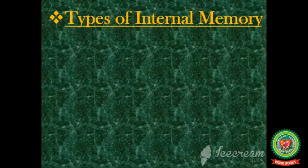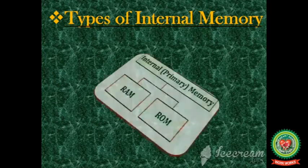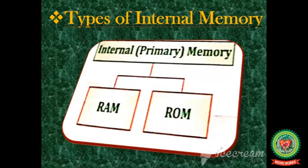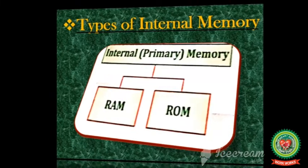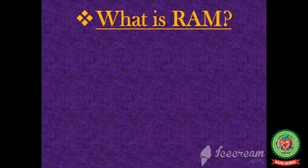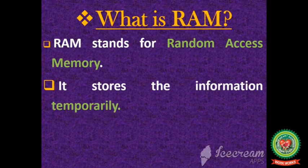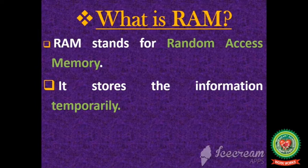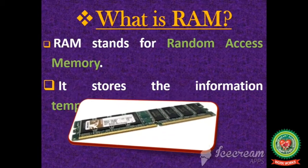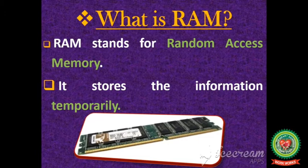There are two types of internal memory: RAM and ROM. First is RAM. RAM stands for Random Access Memory. It stores information temporarily, meaning the information stored in this memory is lost when you turn off the computer or when the power goes off. This is what a RAM chip looks like.